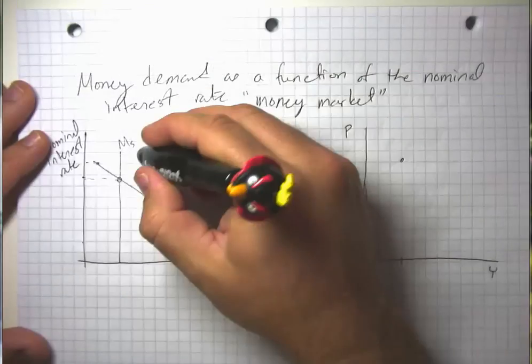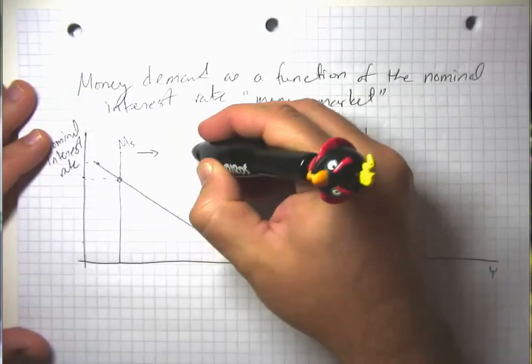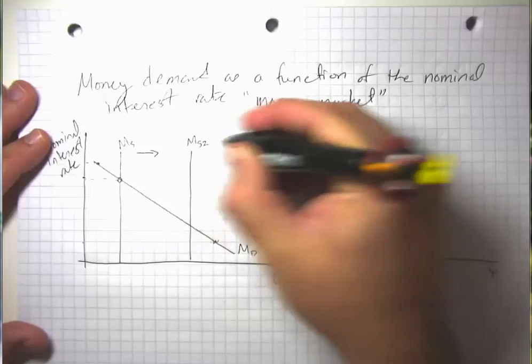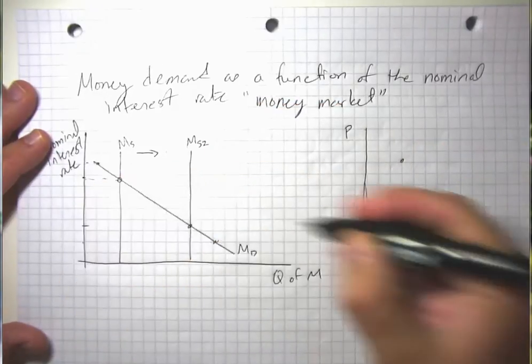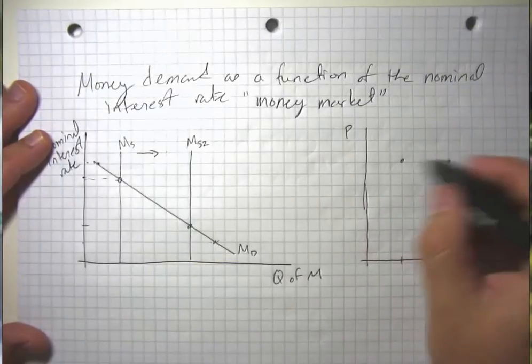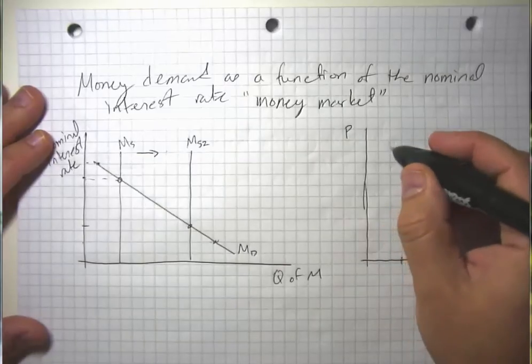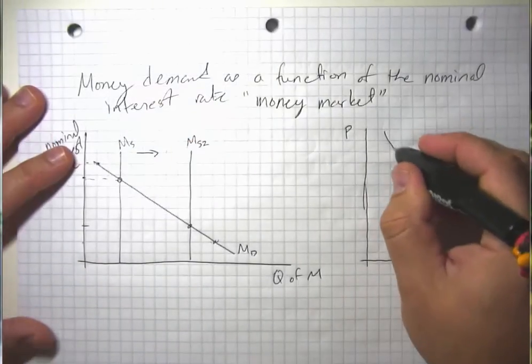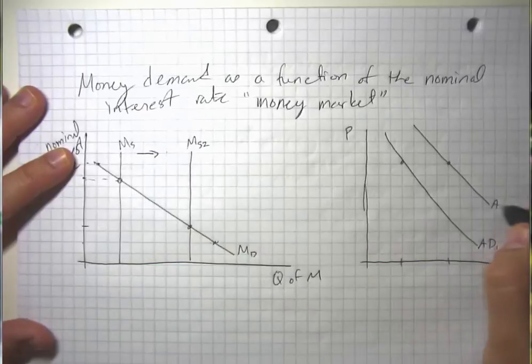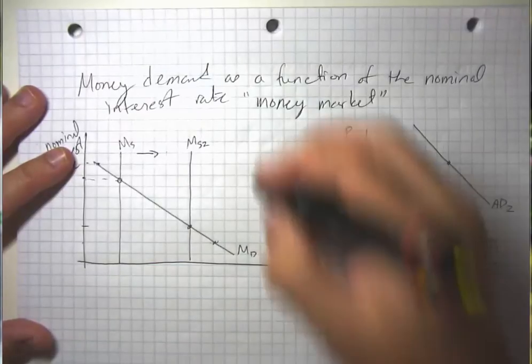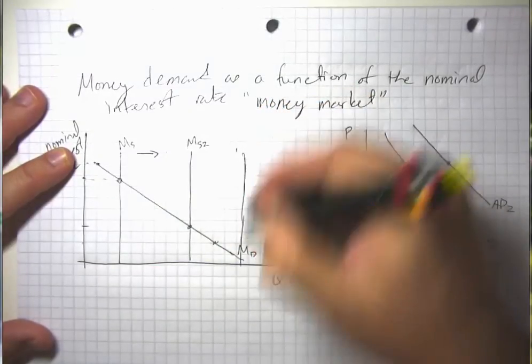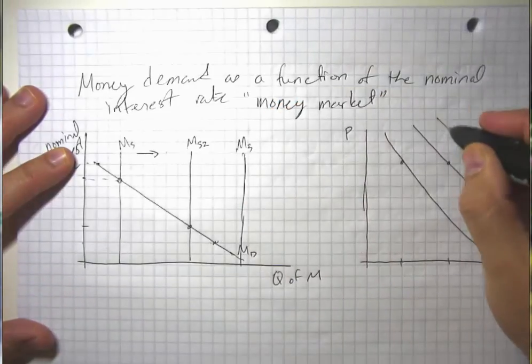As the money supply grows, then that's going to go ahead and give us a lower interest rate here. And people are going to be willing to demand more GDP even at the same price level. So a change in the money supply causes a change in the aggregate demand curve. So far, so good. And maybe we could even shift it out all the way to M3 over here. And that would give us yet another aggregate demand curve.